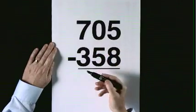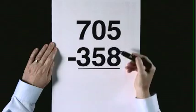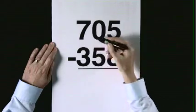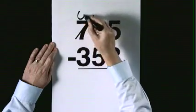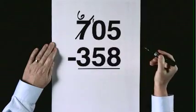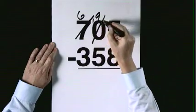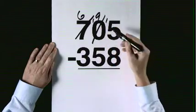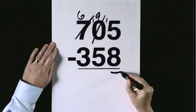705 subtract 358. We can't subtract, exchange from the 7 becomes a 6, 10. 10 becomes a 9, 15. 15 take 8 is 7.